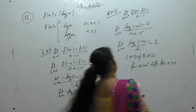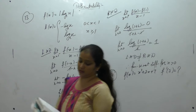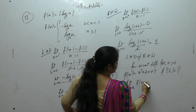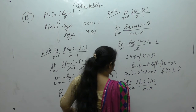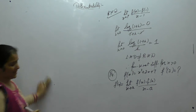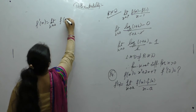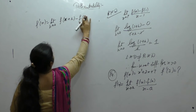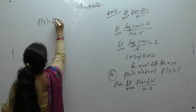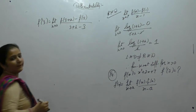Now the next one. If f(x) = x² + 2x + 7, find f'(3). We know that f'(a) = limit x tends to a of [f(x) − f(a)] / (x − a). Now we want to find f'(3), so we write f'(3) as limit h tends to 0 of [f(3 + h) − f(3)] / (3 + h − 3).